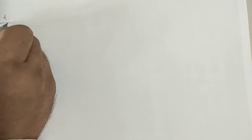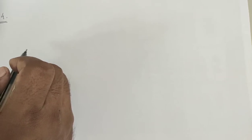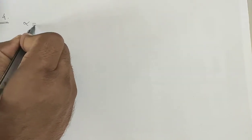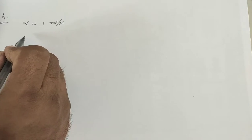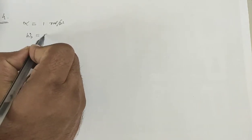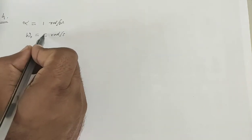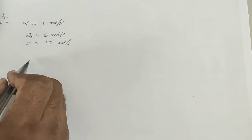HCVM solution, Chapter 10, Question 4. A body rotates about a fixed axis with angular acceleration of 1 radian per second square. Through what angle does it rotate during the time in which its angular velocity increases from 5 radian per second to 15 radian per second? Here we have angular acceleration alpha given as 1 radian per second square. Initial velocity is 5 radian per second and final velocity is 15 radian per second.